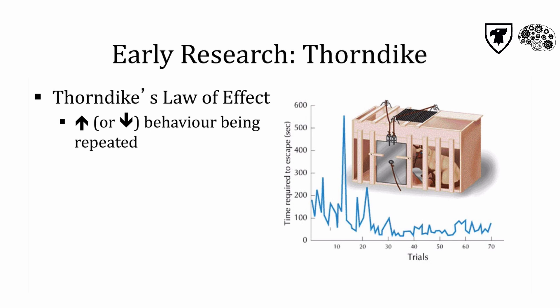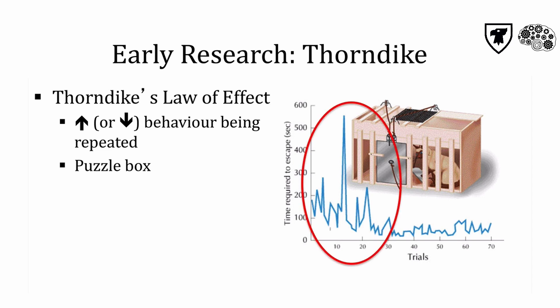This theory was based upon his research with cats in a puzzle box. A cat was placed in a box with a lever-operated door, and tasty salmon was placed on the other side. By trial and error, the cats all managed to escape the box by trying different behaviors, and the ones that resulted in desirable outcomes, like pressing a lever that opens a door, were repeated. After a few trials in the puzzle box, the cats escaped very quickly, once they figured out the best response.